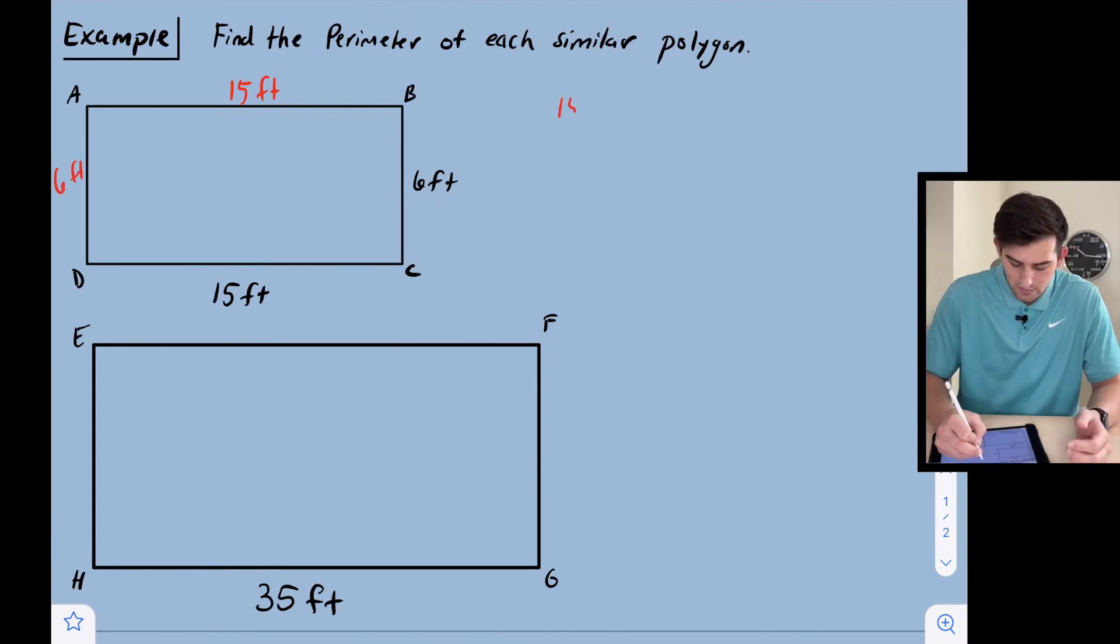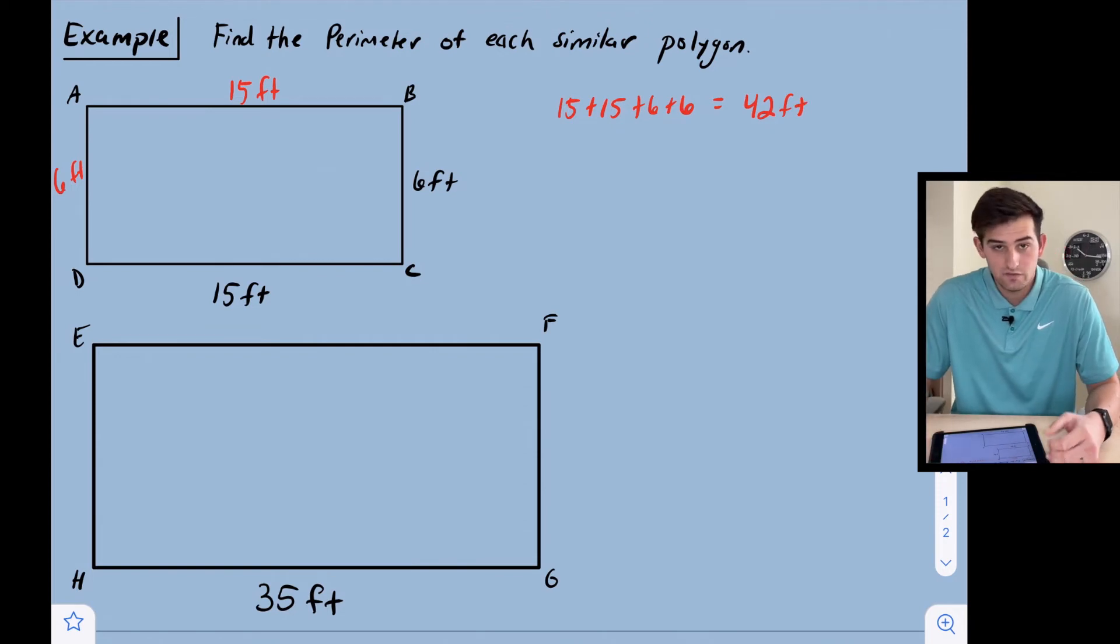We can add these up: 15 plus 15 plus 6 plus 6, and that gives us 42. So we know our perimeter is 42 feet for rectangle ABCD.